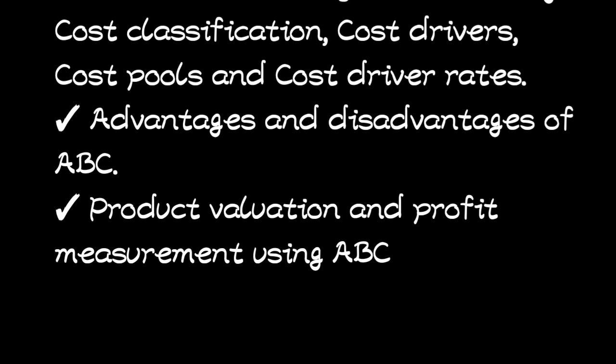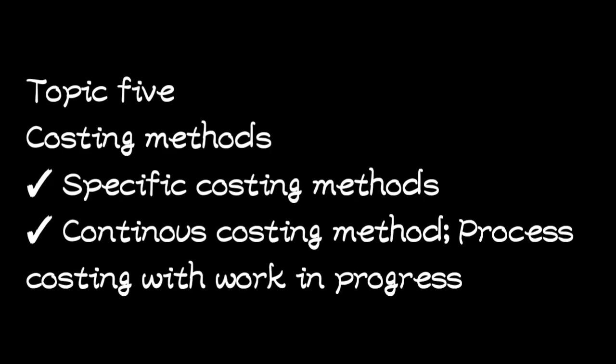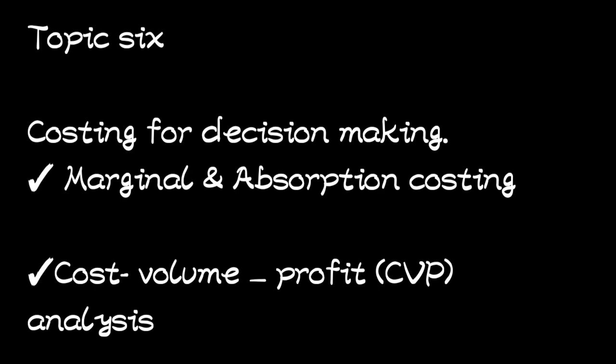That is topic four, cost and management accounting. Then topic five is called Costing Methods. Under this we shall look at the specific costing methods and the continuous costing methods, whereby we shall have process costing with work in progress. Topic six is Costing for Decision Making. Under this we shall look at marginal and absorption costing, the CVP — cost volume profit — analysis, and the short run tactical decisions.